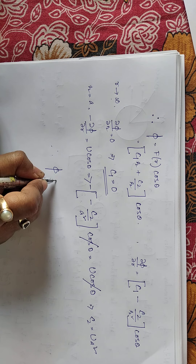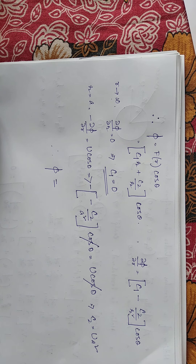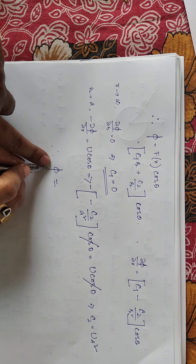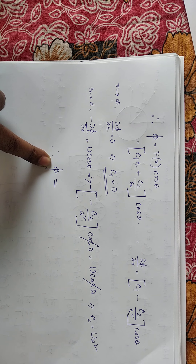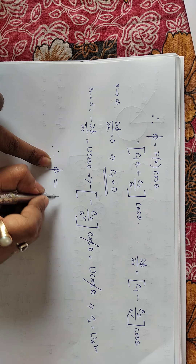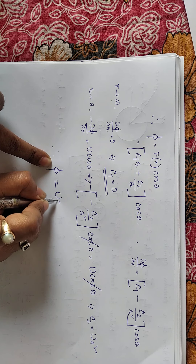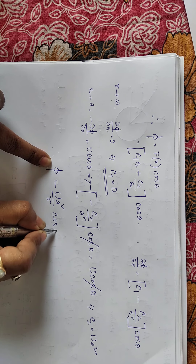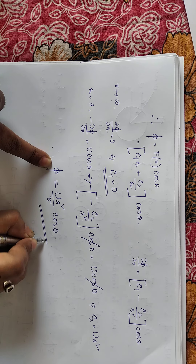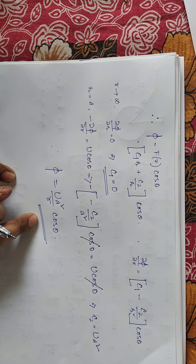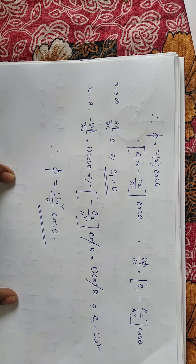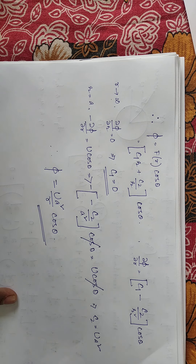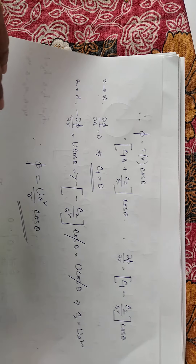Therefore the velocity potential for the case when the circular cylinder is moving with uniform velocity U is: phi = U·a²·cos theta / r. This is the velocity potential for the case when the cylinder is moving and the liquid is at rest.